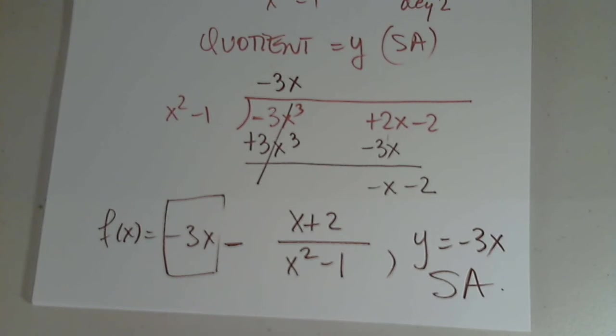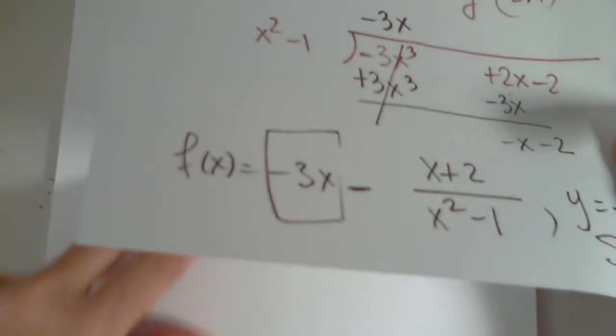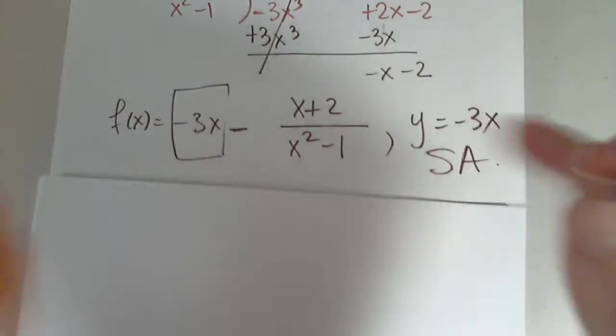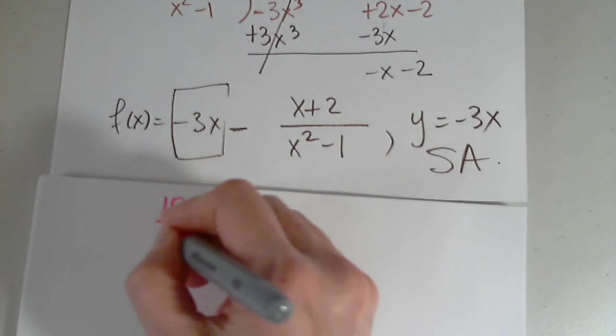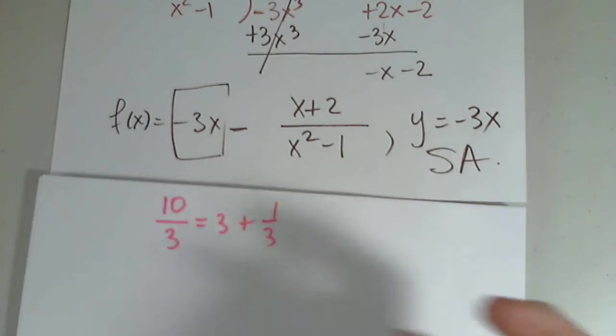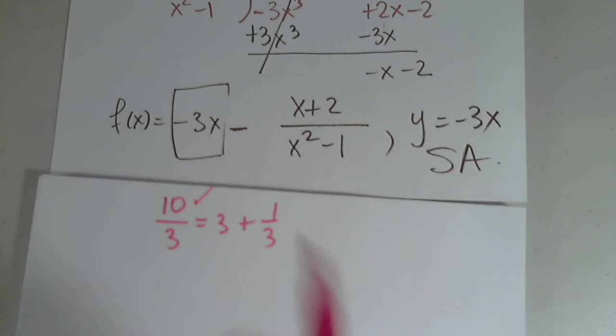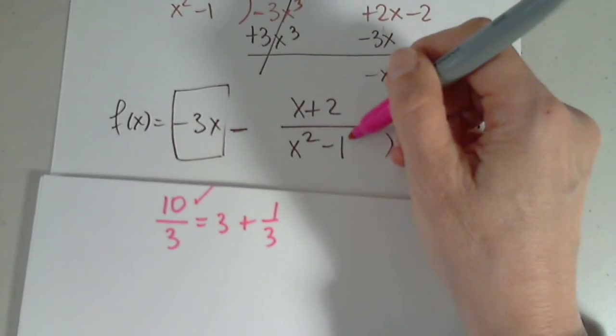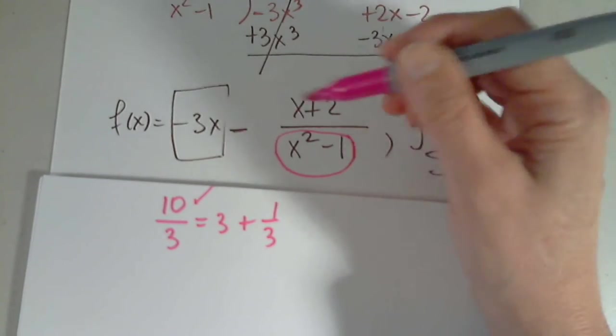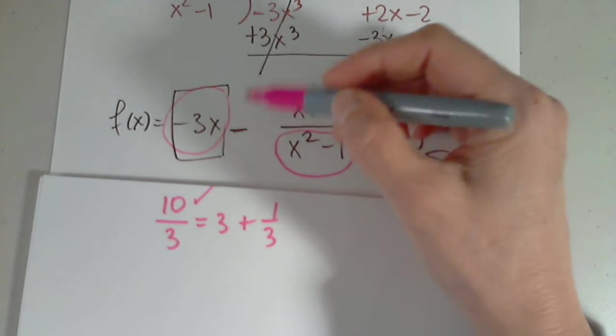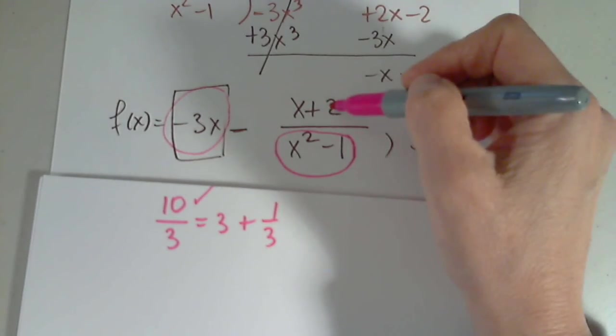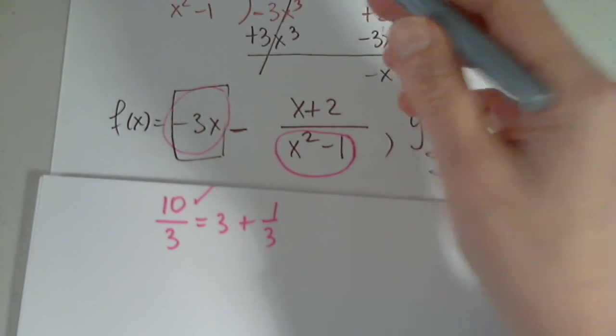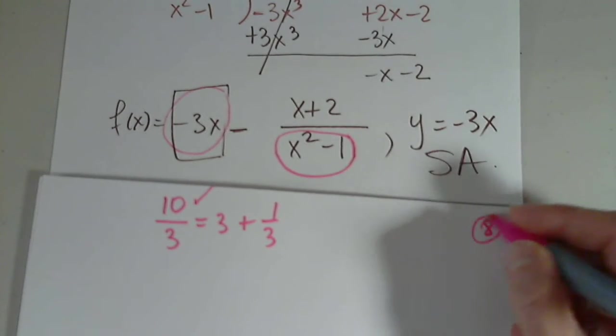In case you have any doubts about your long division here. You can always go back and check. How do you check? So this is like saying 10 divided by 3 is 3 plus 1 third. How will I check? 3 times 3 plus 1 has to give me 10. So when I multiply this by this and I subtract x and subtract 2. If I get the numerator. The original numerator. Then the division is correct.